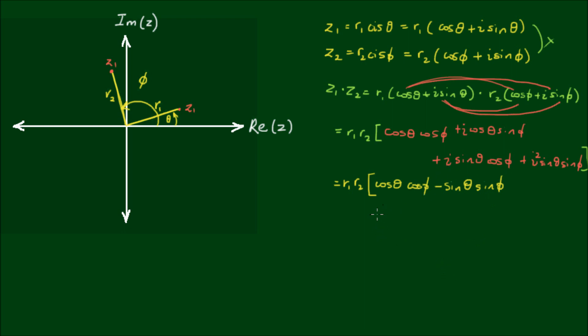And now for the imaginary component, I have plus i multiplied by cos θ sin φ plus sin θ cos φ.